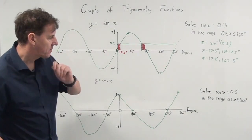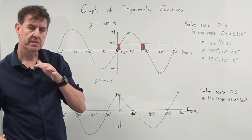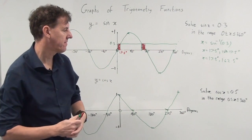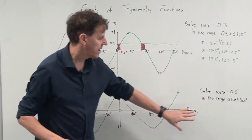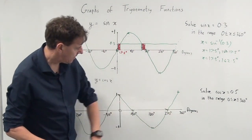So let's look at this next equation. This time we're looking at the cosine function and the equation is cos x equals 0.5. And again we're in the range 0 to 360 degrees, so it's the cosine graph.